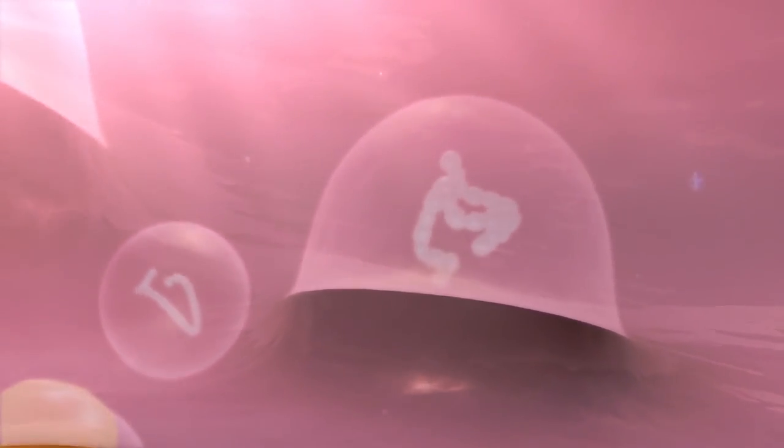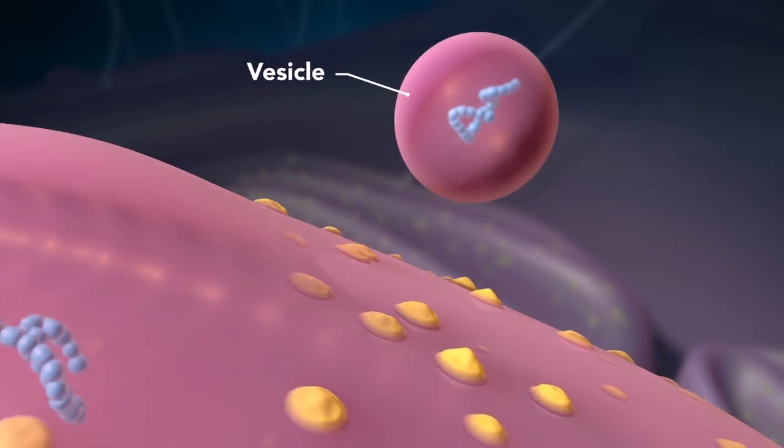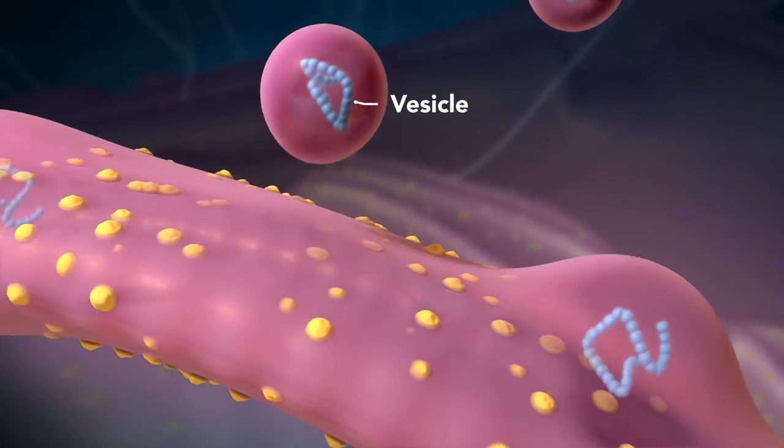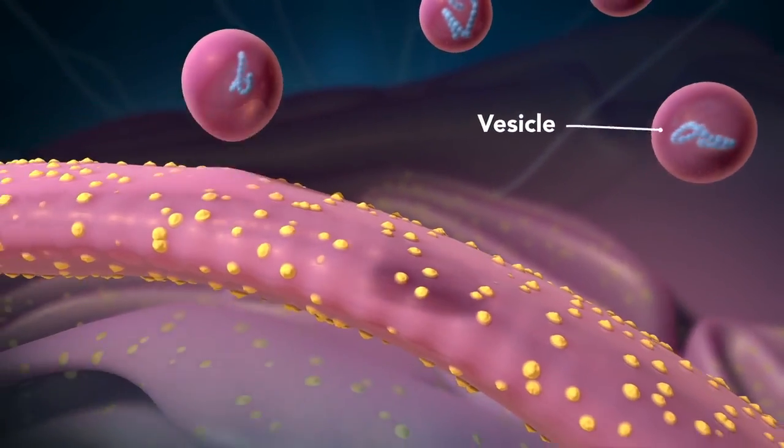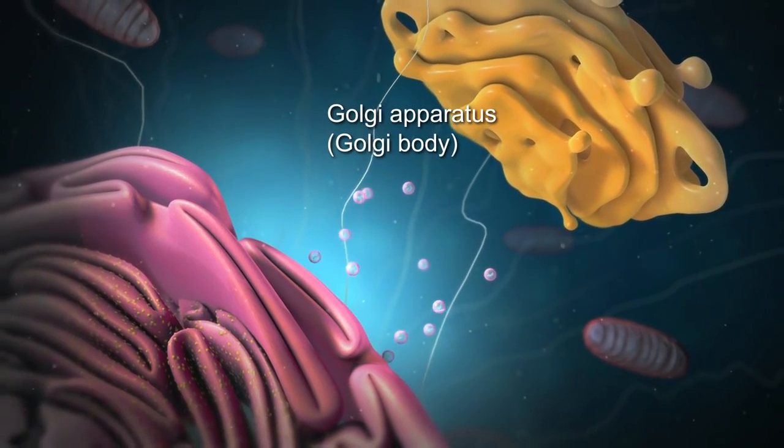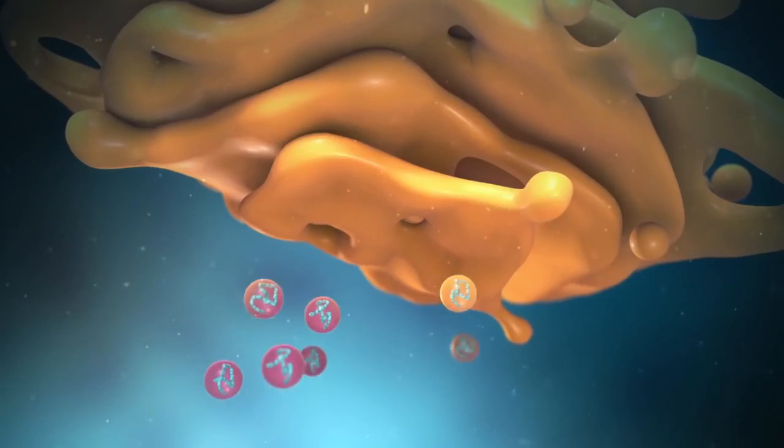Proteins and other materials emerge from the endoplasmic reticulum in small vesicles, where the Golgi apparatus, sometimes called the Golgi body, receives them.